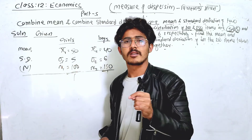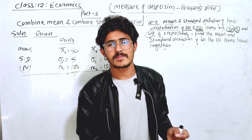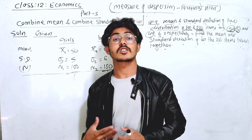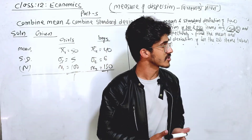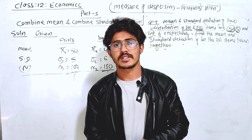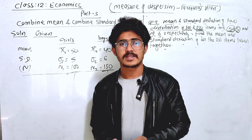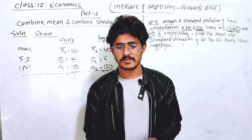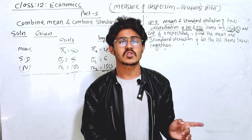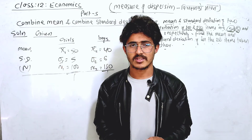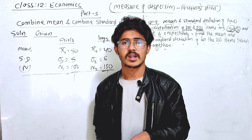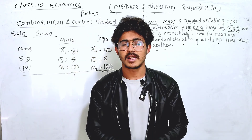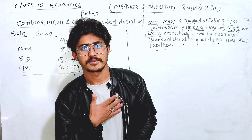BBS First Year Business Statistics is a playlist. This chapter covers measure of dispersion, including combined mean and standard deviation. We will next go to the index number topic. Quartal Davis Syndical is linked in the description. You can see the class 2L playlist there. Namaste.